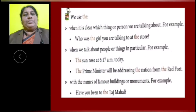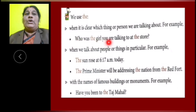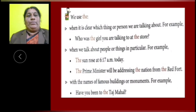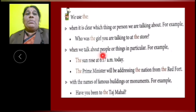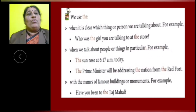Children, we use THE when it is clear which thing or person we are talking about. For example, 'Who was the girl you were talking to at the store?' Here, it is clear which girl and which store. Second, when we talk about people or things in particular — one person, one thing, one time — that is called particular.